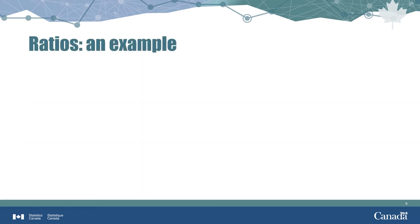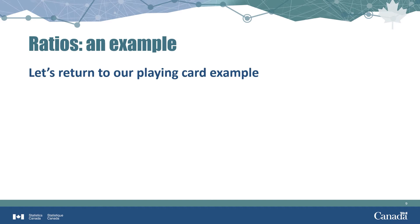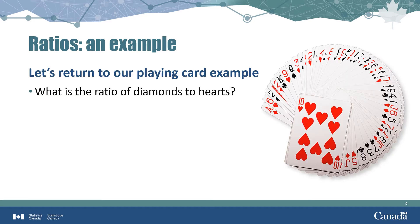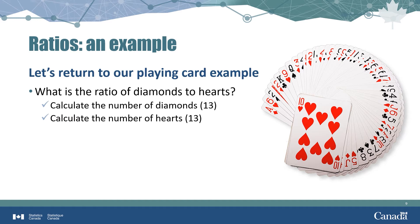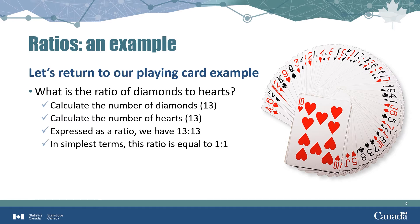Let's return to our playing card example. What is the ratio of diamonds to hearts? We know there are 13 diamonds and 13 hearts, giving us a ratio of 13:13. This can be simplified by dividing both sides by 13, which gives a ratio of 1:1. This means that for every diamond card in the deck, there is one heart card.